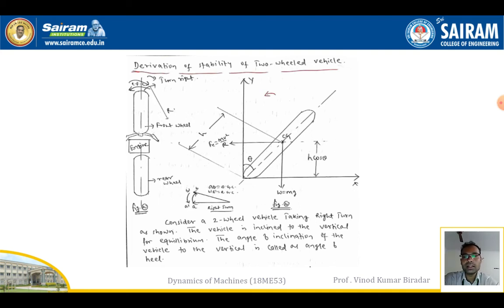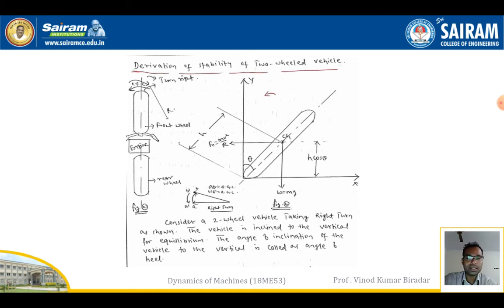Let us assume a two-wheel vehicle - it is a bike. Observe the diagram: the front wheel and the back wheel, which is called the rear wheel. At the middle of the two wheels, the engine is connected. In figure B, when you are going to turn either left or right, a centrifugal force will be generated near the engine at the center. When you turn the vehicle, that is called the active gyroscope couple; when you release and it returns to the original position, that is called the reactive gyroscope couple.